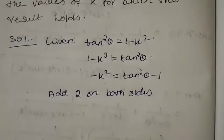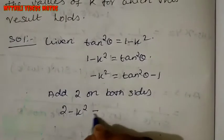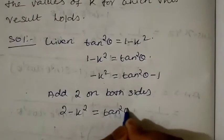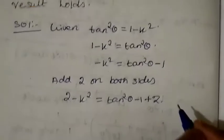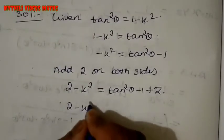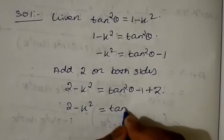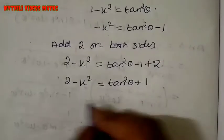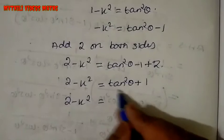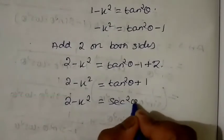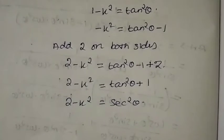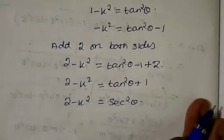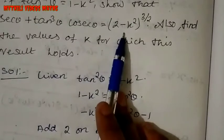Adding 2: 2 minus k squared equals the right side, tan squared theta minus 1 plus 2, which gives us 2 minus k squared equals tan squared theta plus 1. So 2 minus k squared equals sec squared theta.